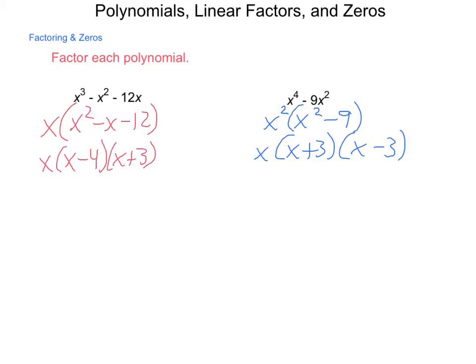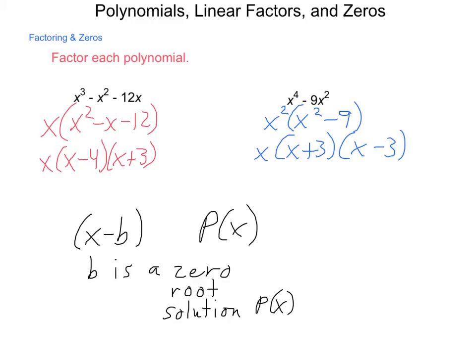Now what does it mean for an item to be a factor? In the world of mathematics, if we have an expression that's x minus b, and we say that it is a factor of some equation, say p of x, or some polynomial, then that means a lot of things. It means that b is a zero of that expression. It is also called a root of the expression.